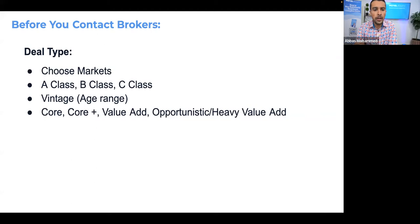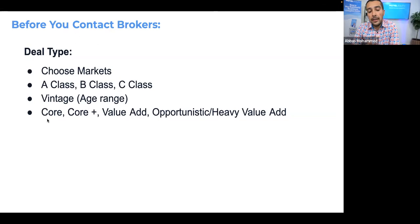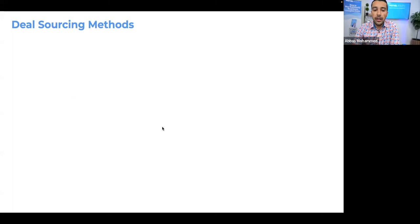You also want to decide: are you going after core, core-plus, value-add, or opportunistic (heavy value-add) deals? If you're brand new, I would not go after heavy value-add — they require a lot of experience, and a lot can go wrong. Value-add tends to be the easiest starting point. Core-plus and core are more like A-class deals with lower returns but stabilized assets — better suited for large institutions. If you're just starting out, your best bet is value-add.